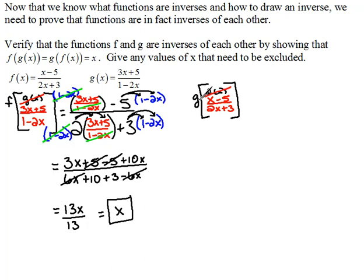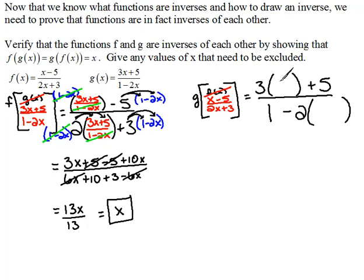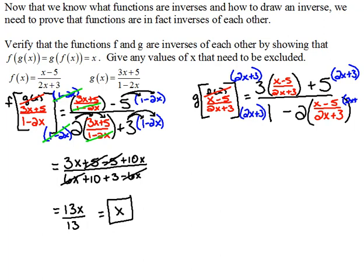This notation tells me to take the g function — 3 times the variable plus 5, over 1 minus 2 times the variable — but this time we're using (x − 5) over (2x + 3) as our variable. So I'm going to fill that in. This again gives us a complex rational expression, so in order to simplify we need to multiply through by the common denominator, which in this case is (2x + 3). I'm multiplying every single term — doing that in blue so you can see the difference. In my first term, the (2x + 3)'s cancel.